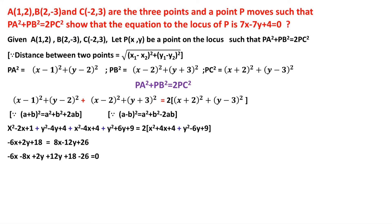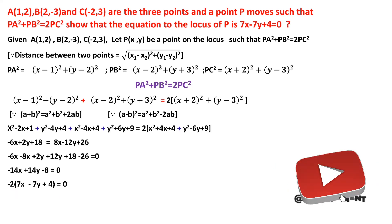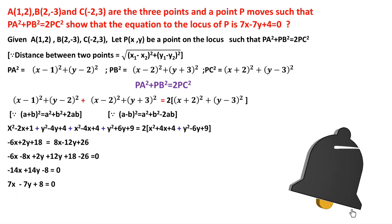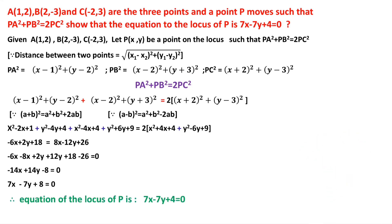18 - 26 = -8, giving -14x + 14y - 8 = 0. Taking -2 as common: -2(7x - 7y + 4) = 0. Transposing -2 to the right side gives 0, so the equation is 7x - 7y + 4 = 0. Therefore, the equation of the locus is 7x - 7y + 4 = 0.